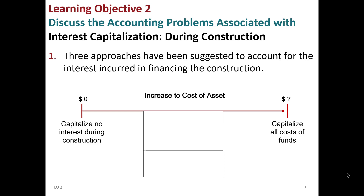We talked a little bit about different types of costs that we capitalize, like price and fees and things like that. But what if we borrow money to construct an asset? We can build our own assets, but if it takes time — like a building takes two, three, or four years — there are interest expenditures being spent. Can't we capitalize those along with architect's fees? Sure we can, but there's a bit of a debate about how much of this interest we can possibly capitalize.